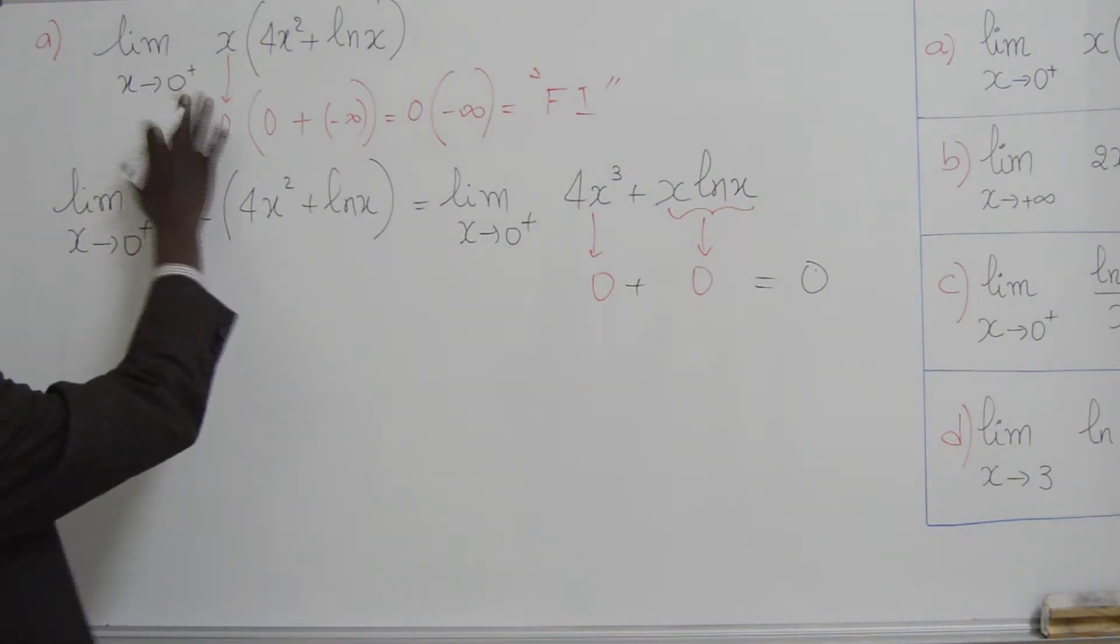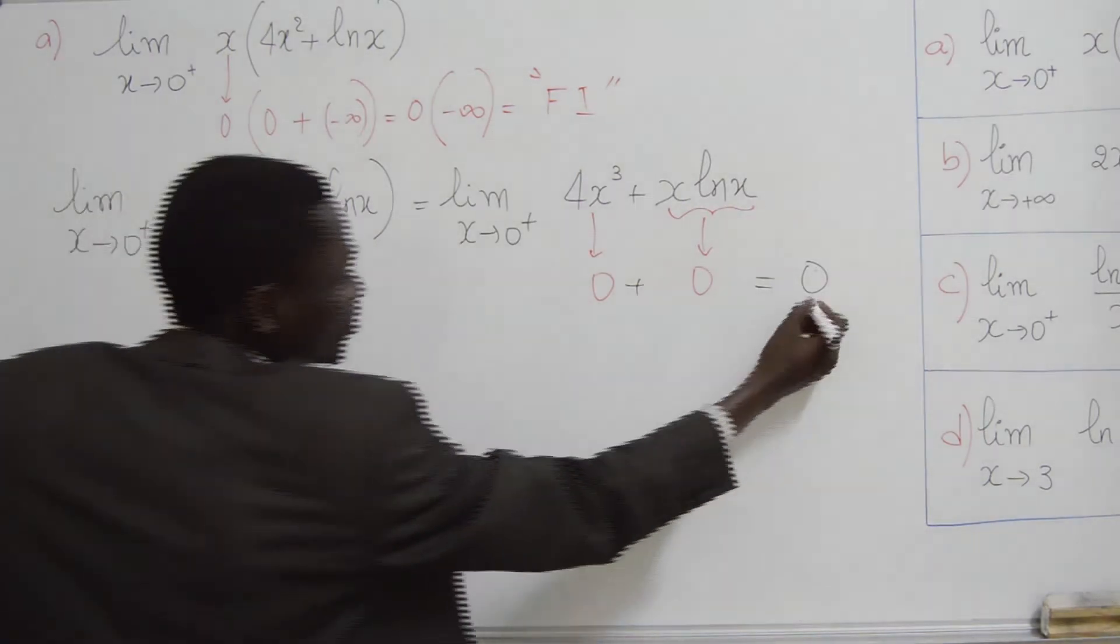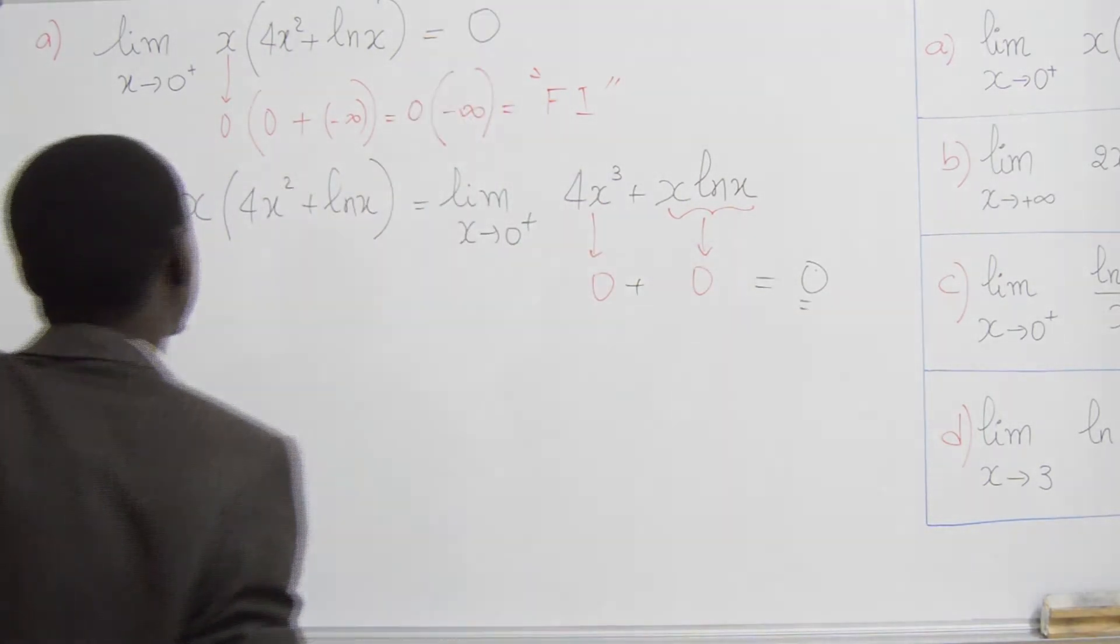Donc, la limite, lorsque x tend vers 0 de x, facteur de 4x², plus ln2x, ça donne tout simplement, comme résultat, 0.